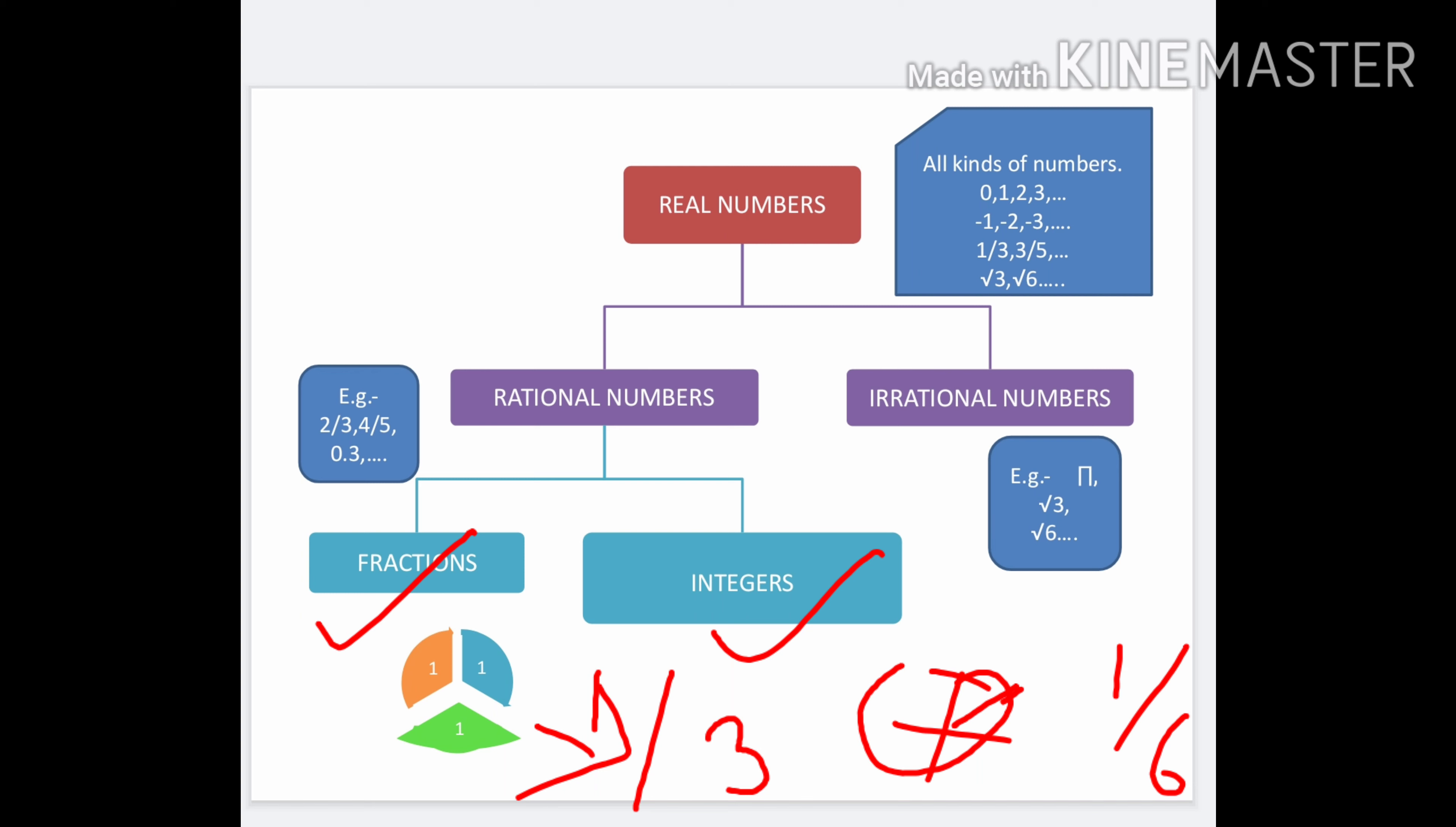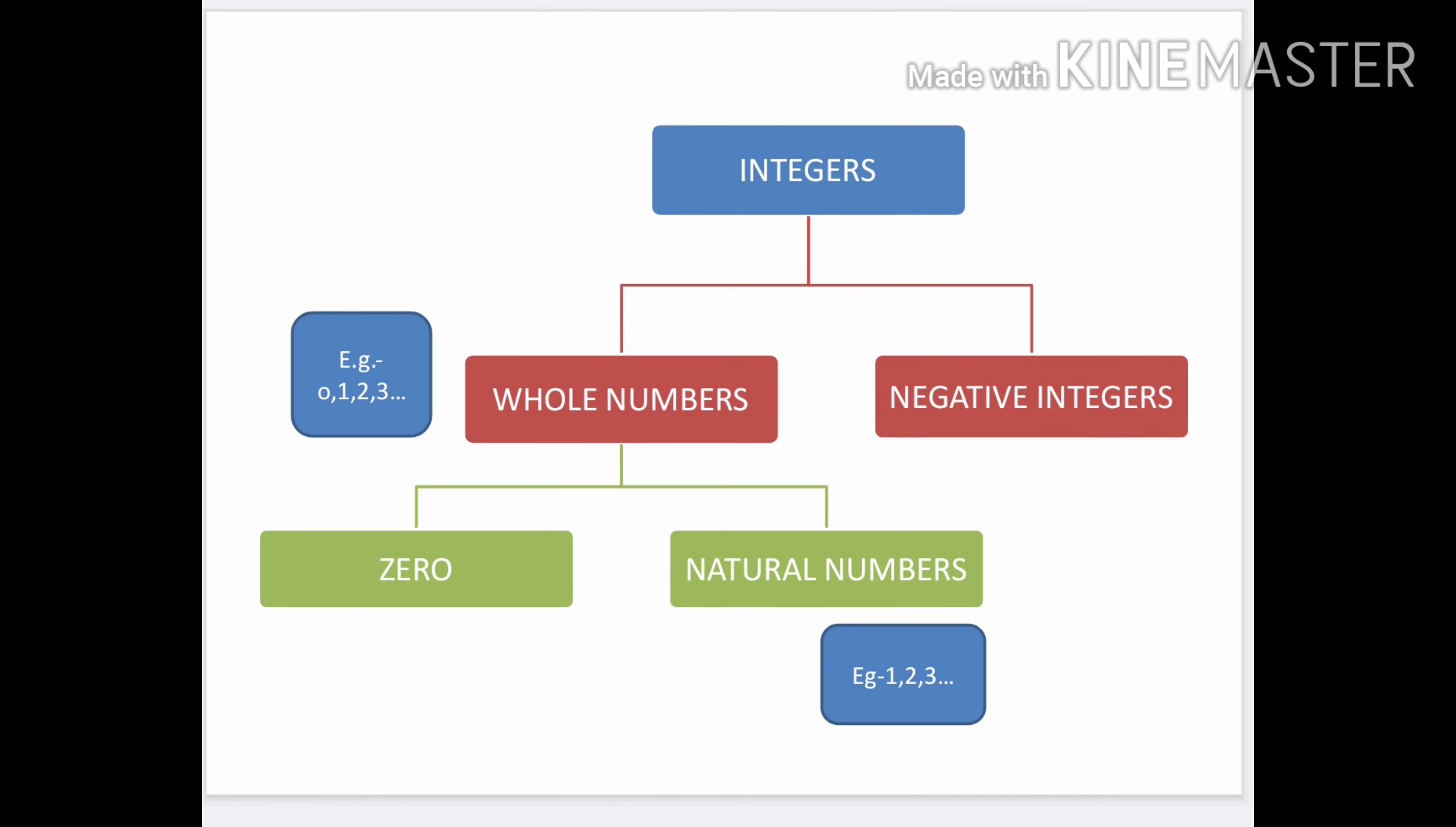Next are integers. In integers, apart from fractions, other numbers come. Integers are also classified into two types: first is whole number, second is negative number. It means integers include numbers that are whole or negative.